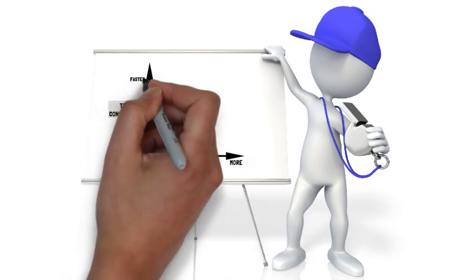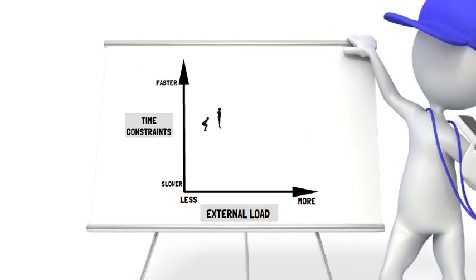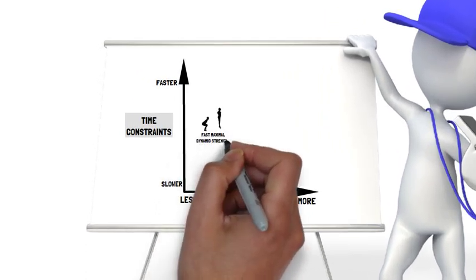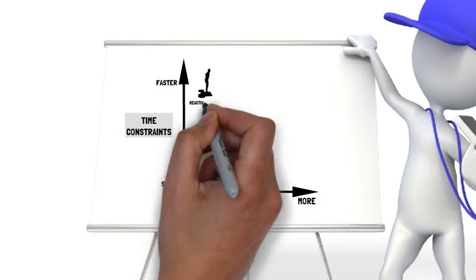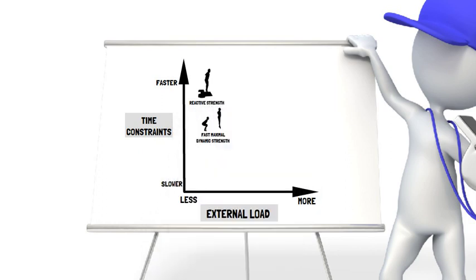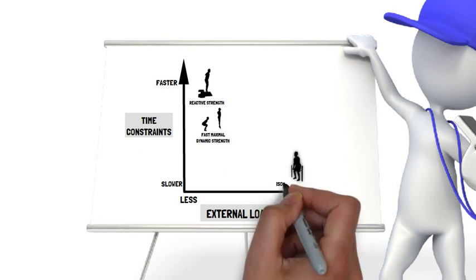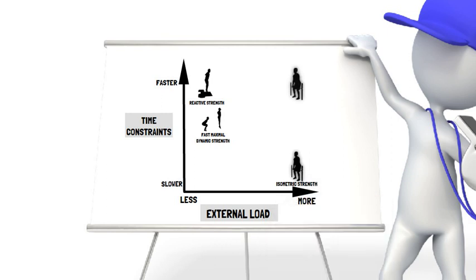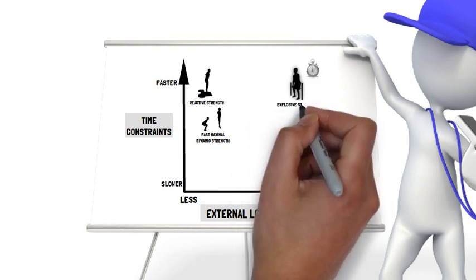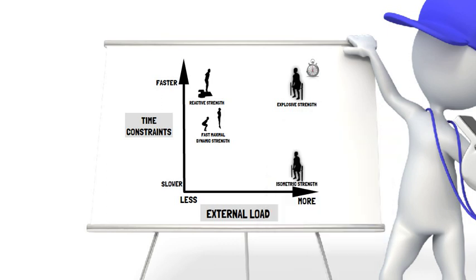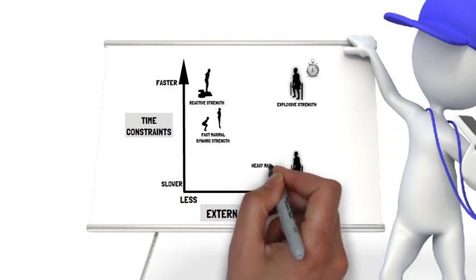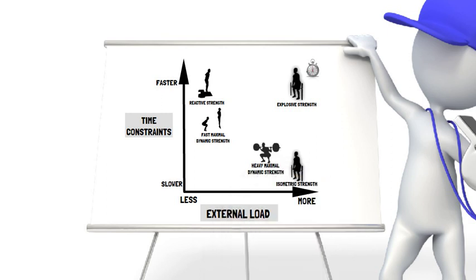For example, fast maximal dynamic strength and reactive strength both involve low external load; however, reactive strength involves faster movements. Whereas on the other end of the spectrum, despite both isometric and explosive strength involving high loads, explosive strength takes place over shorter time periods, and heavy maximal dynamic strength involves a high external load under a slow time constraint.